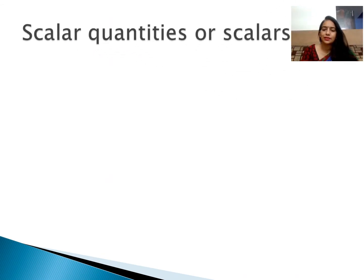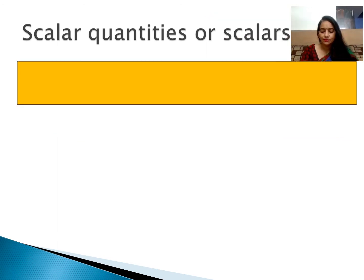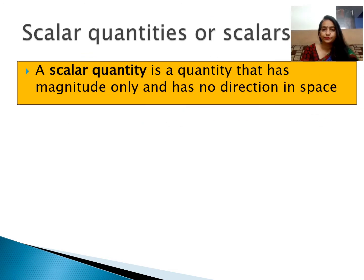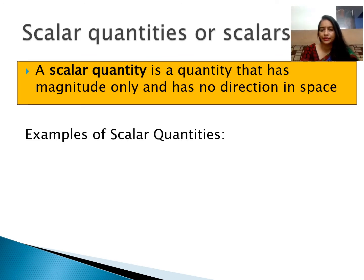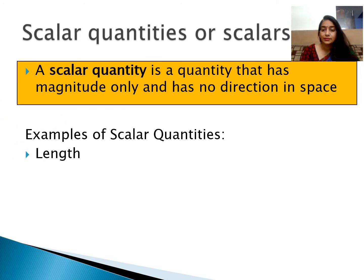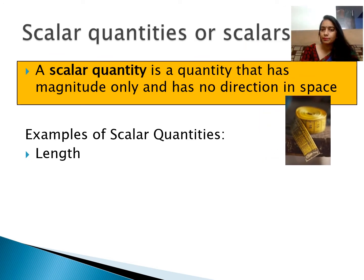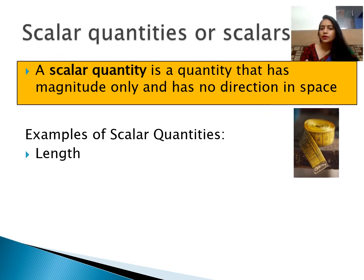First, we want to know what scalar quantities are. Scalar quantities are those quantities which have magnitude only and have no direction in space. There is only magnitude and no direction. We call these scalar quantities. Examples of scalar quantities include length, mass, temperature, and volume — we only see the magnitude of these.